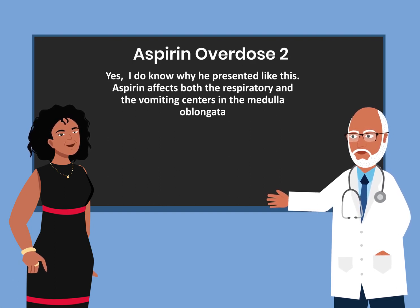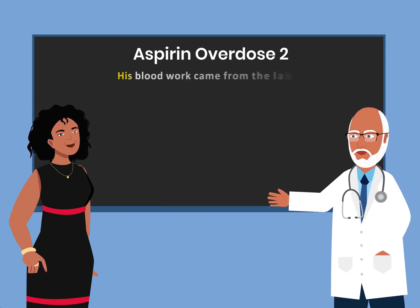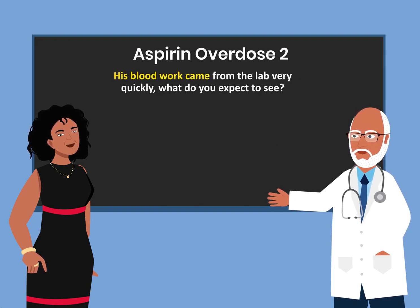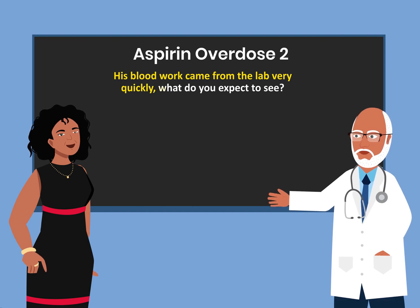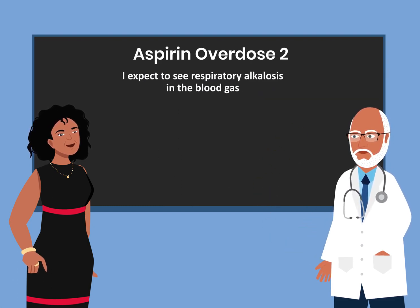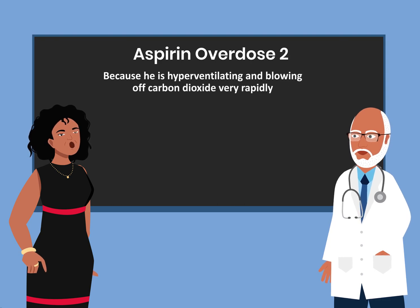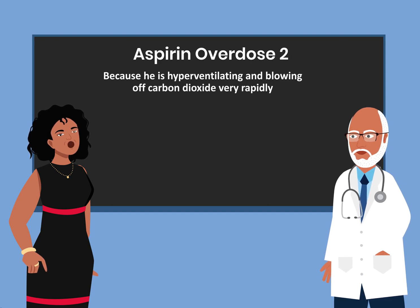Aspirin affects both the respiratory and the vomiting centers in the medulla oblongata. His blood work came back from the lab very quickly. I expect to see respiratory alkalosis in the blood gas, because he is hyperventilating and blowing off carbon dioxide very rapidly.